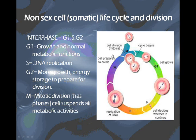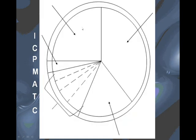Interphase is the longest phase of the cell cycle, and interphase contains G1, S, and G2. During interphase, the first stage is G1, and that is where we see the normal growth and metabolic functions of the cell. On your diagram, G1 is shown here. This is the first stage that it goes into after the last cell division.